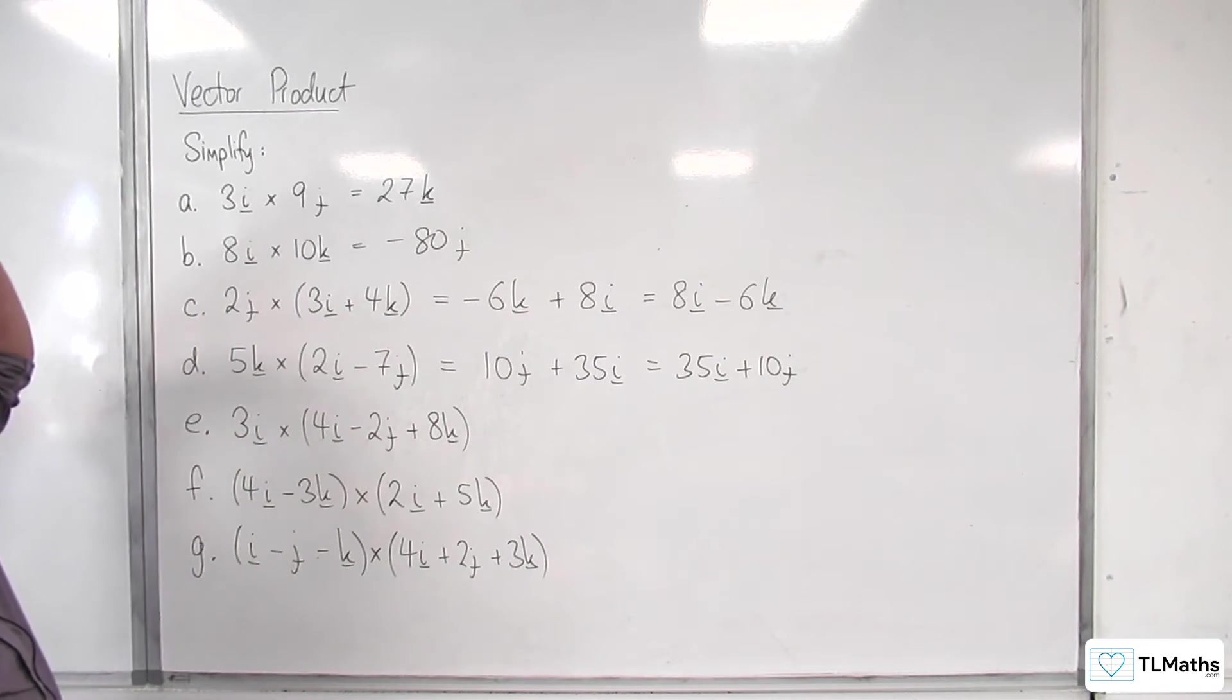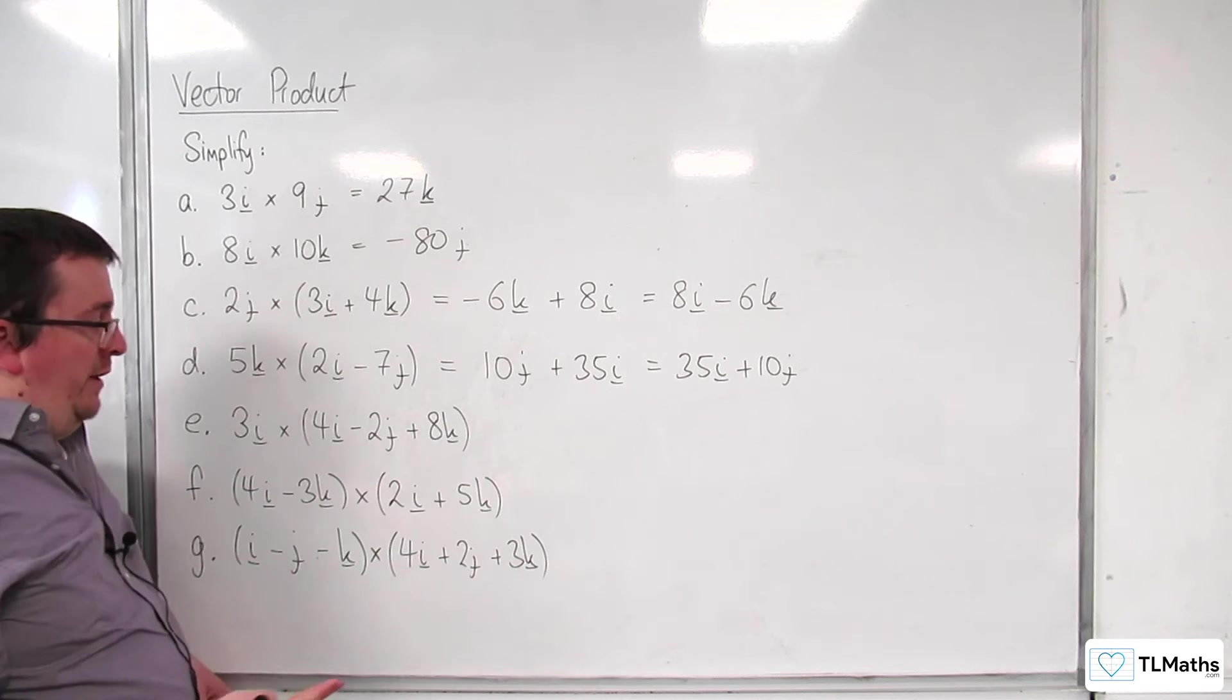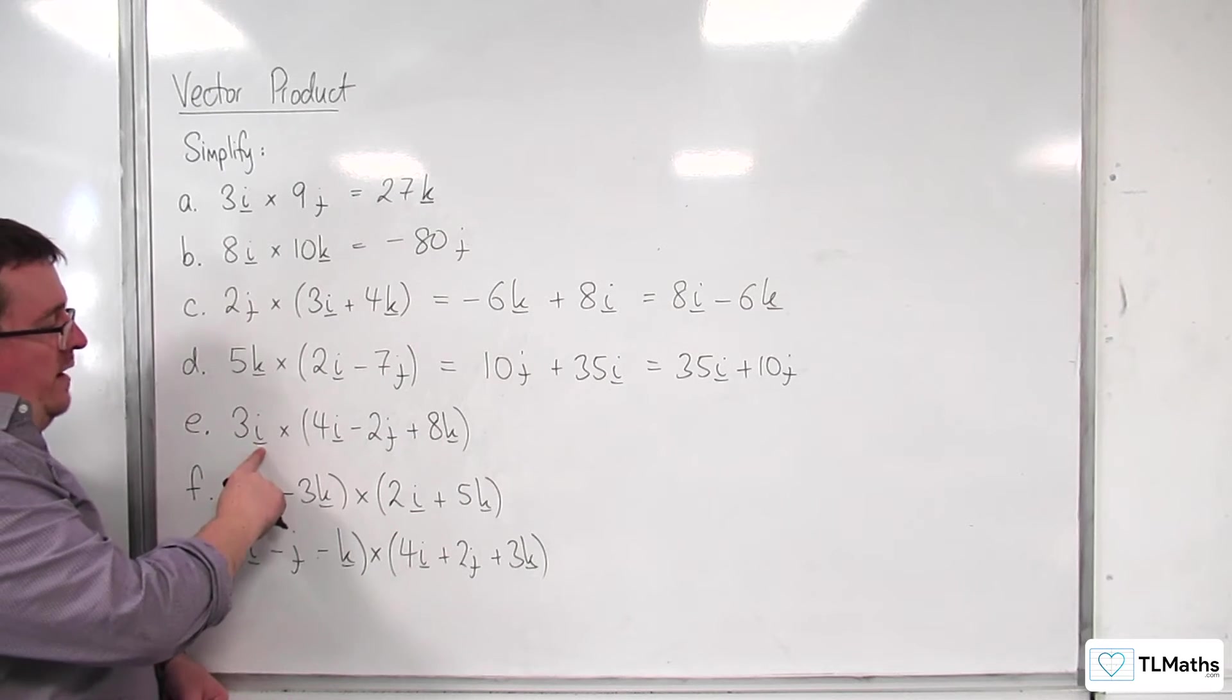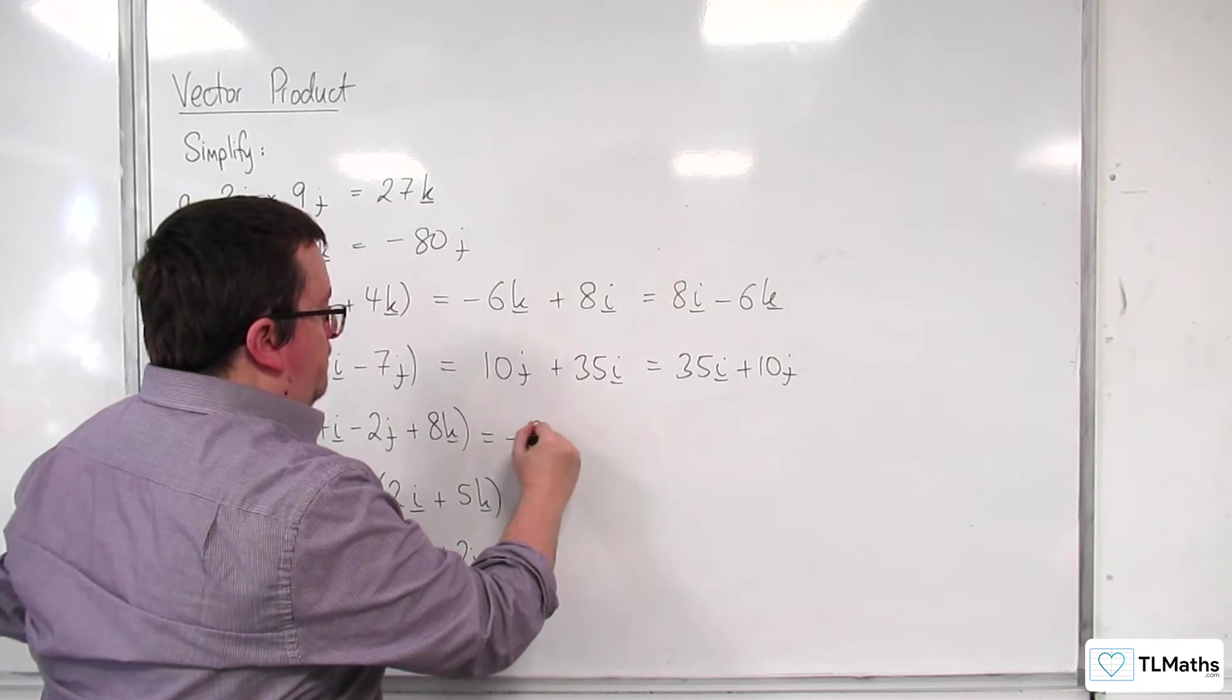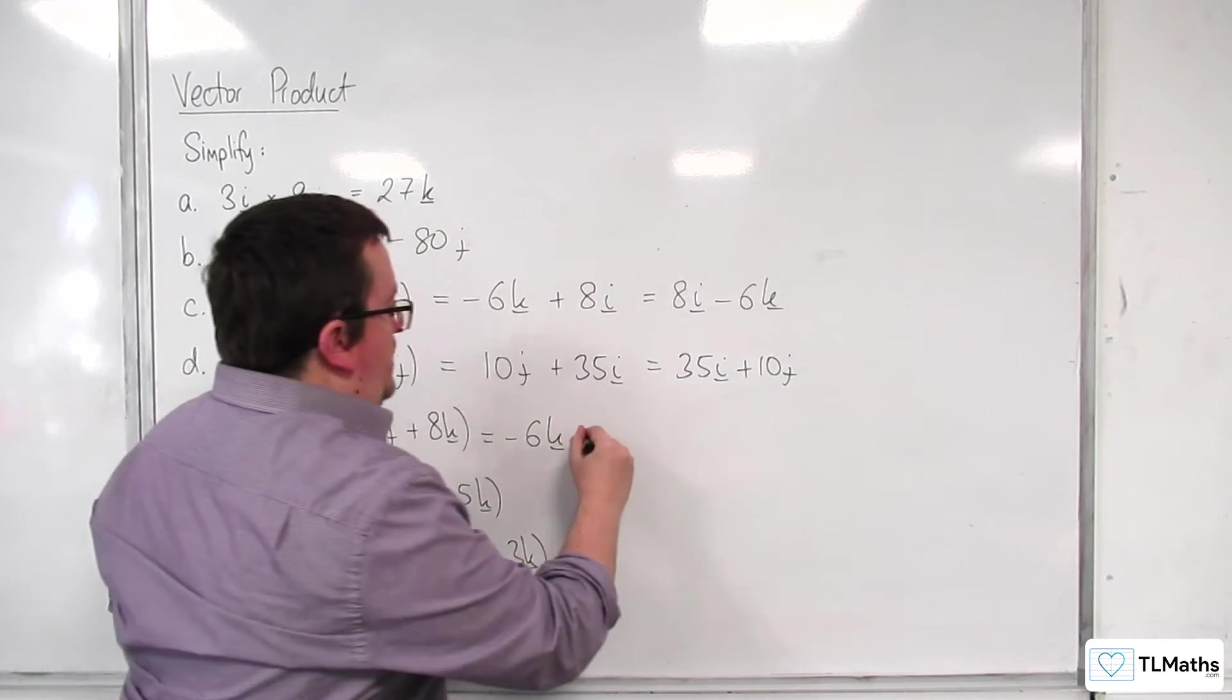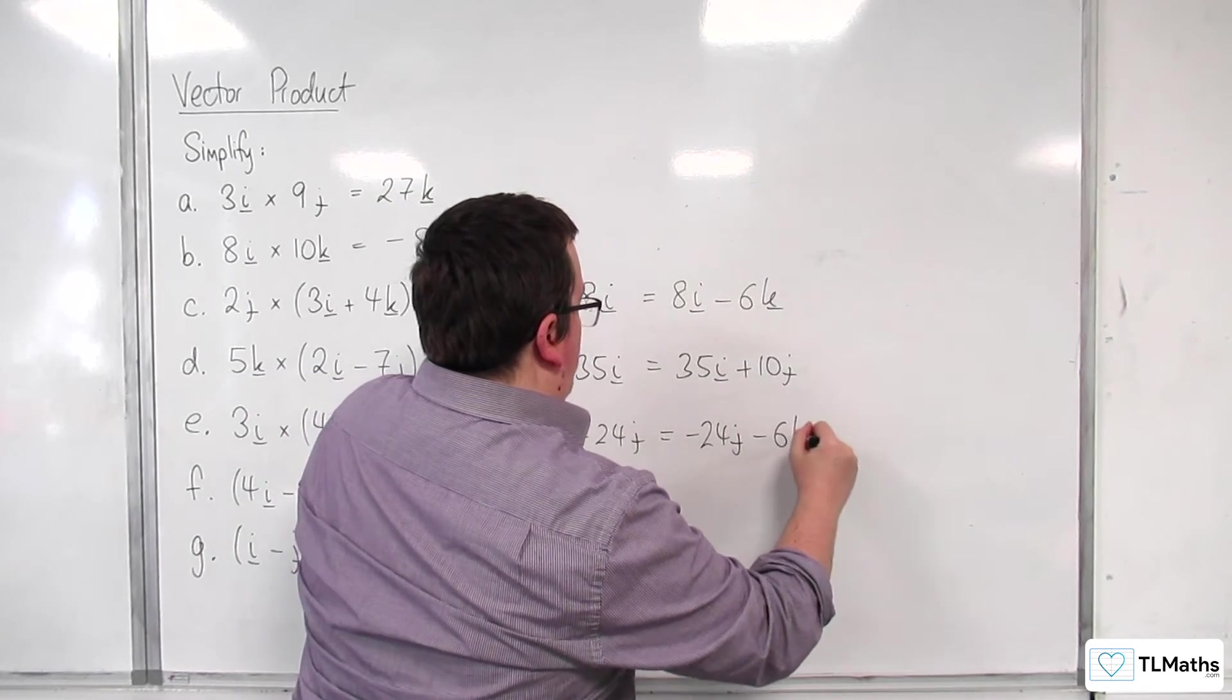Right. Next one. Now, we've got 3i cross 4i. Now, because i and i are obviously parallel to one another, 3i cross 4i is the zero vector. Okay. So, there's nothing there. 3i cross with minus 2j. Well, i cross j is k. So, we're going to get minus 6k. And we've got 3i cross with 8k. i cross k is minus j. So, we've got minus 24j. So, again, we'll probably want to rewrite that. It's minus 24j minus 6k. Put it in that order.